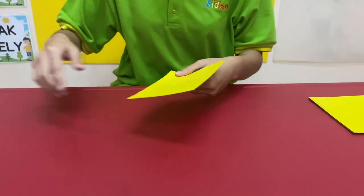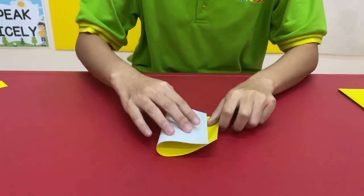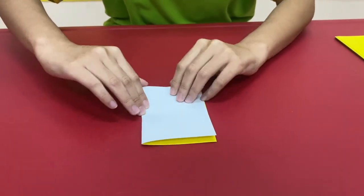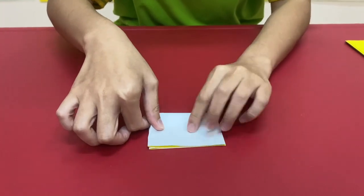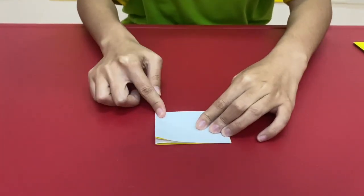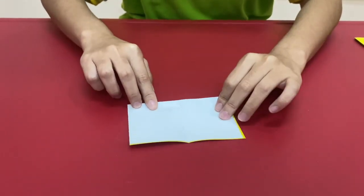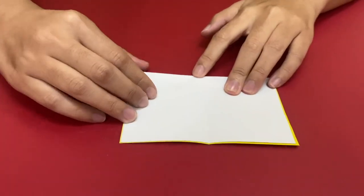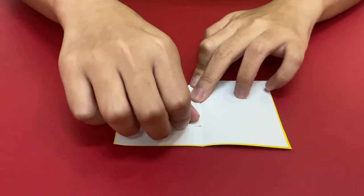When you're done, fold it in the middle and then fold it again. Then you open it once and you can see there's a folding in the middle. So you fold the paper and make it a triangle.